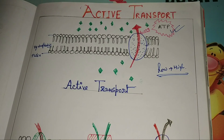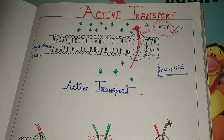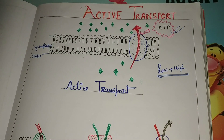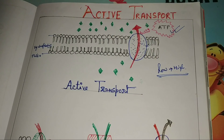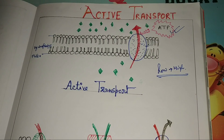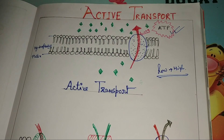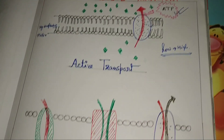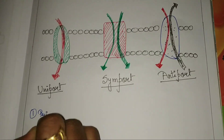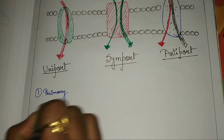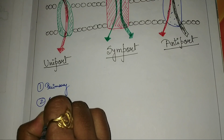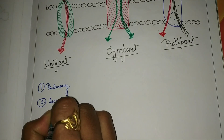If we differentiate what is primary active transport and secondary active transport, we can discuss this. When we divide active transport into two parts, one is primary active transport and another one is secondary active transport.